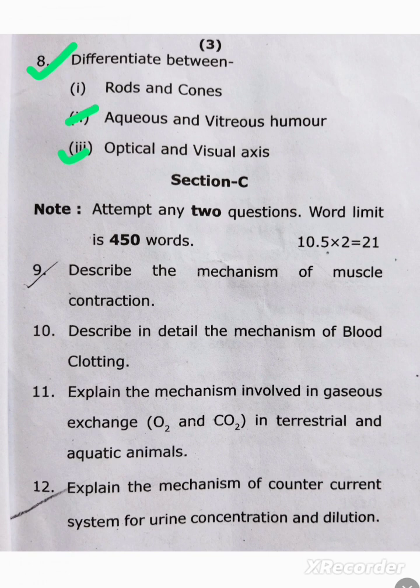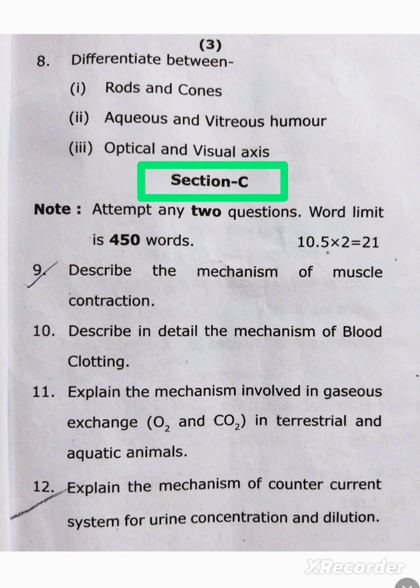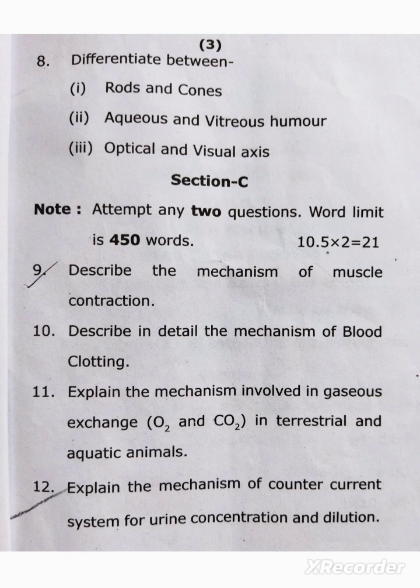Now we move to Section C questions. The instruction for Section C is: attempt any two questions, word limit is 450 words. Overall four questions are given in Section C but you need to do only two questions.